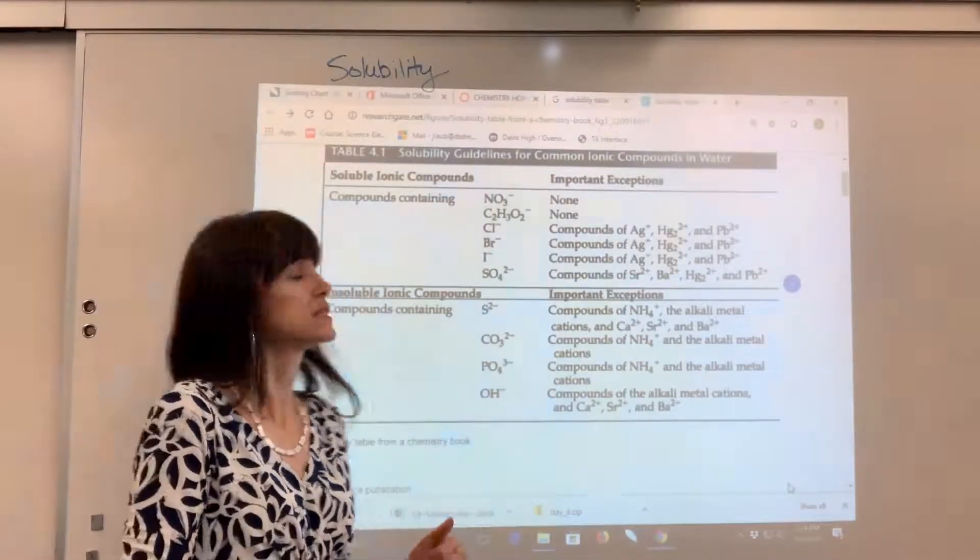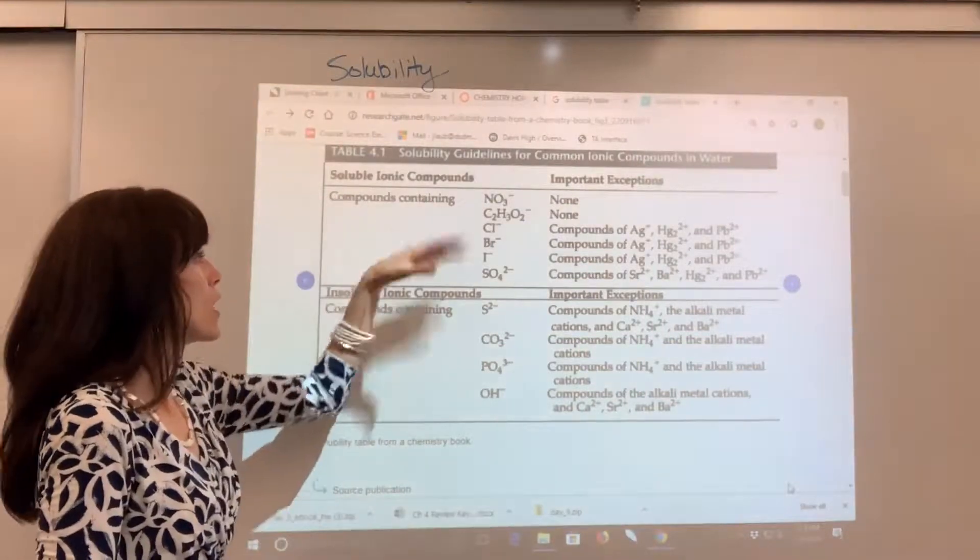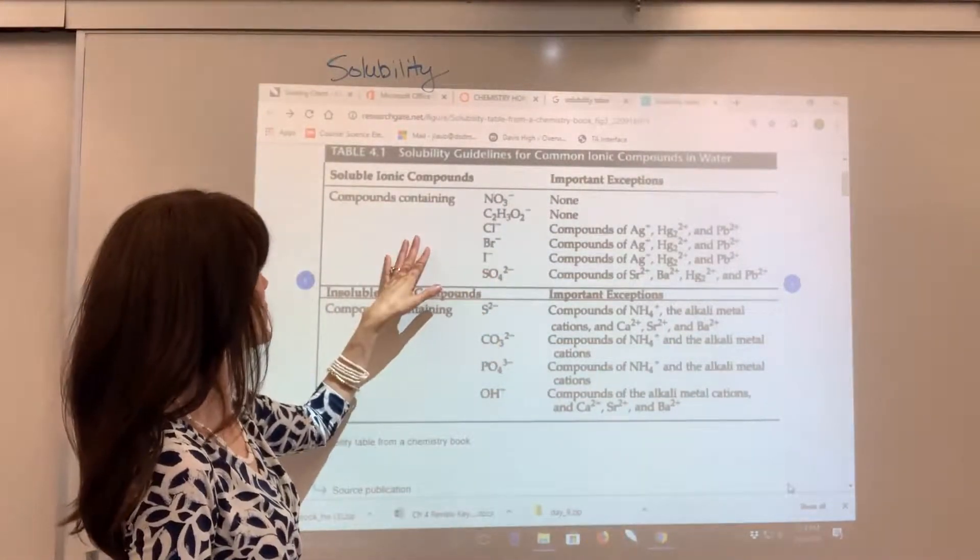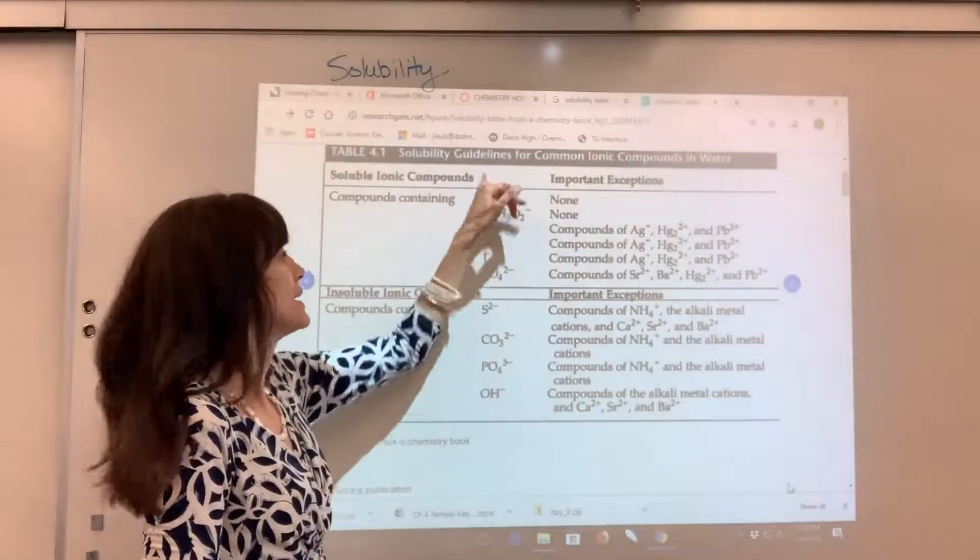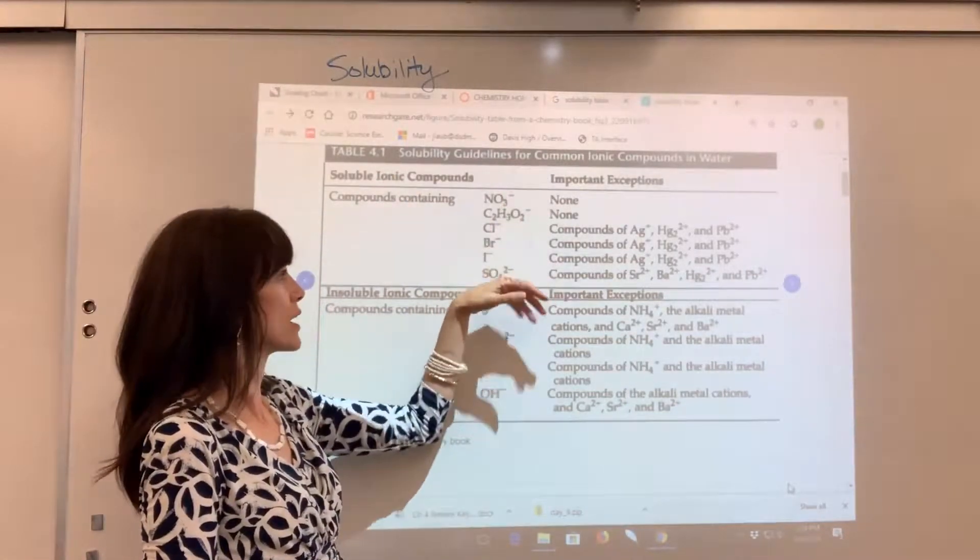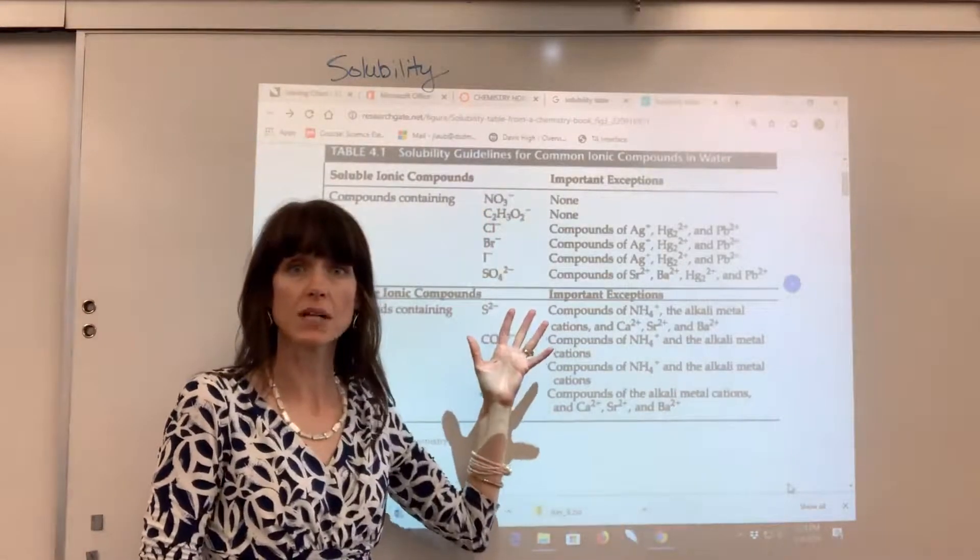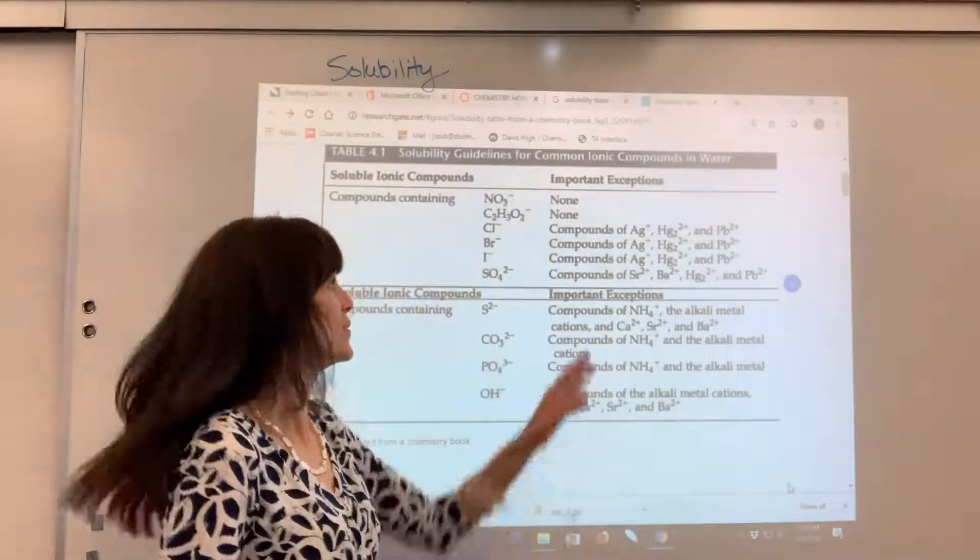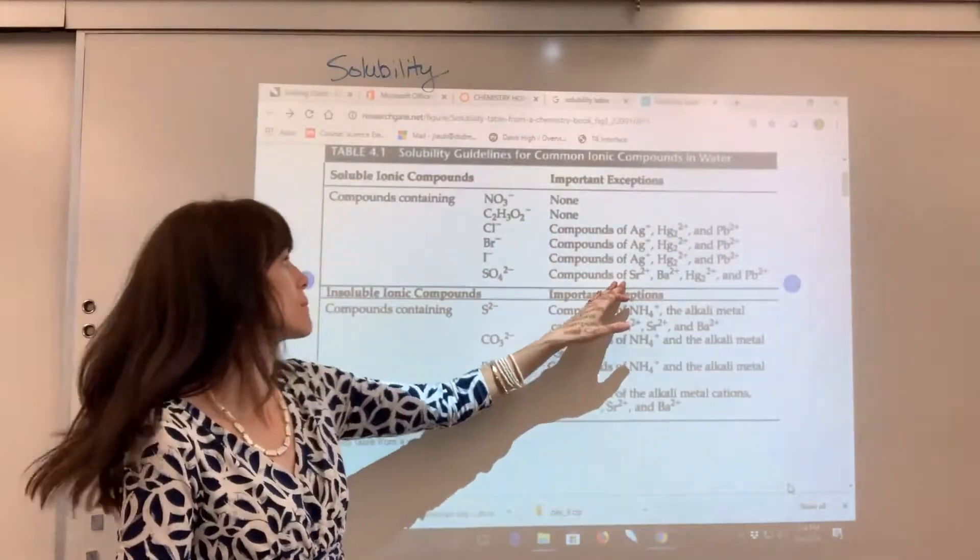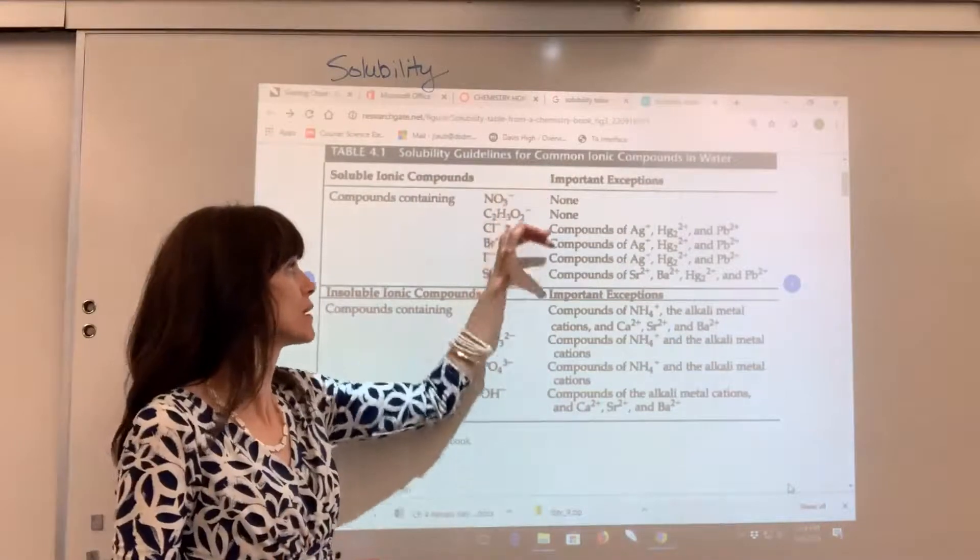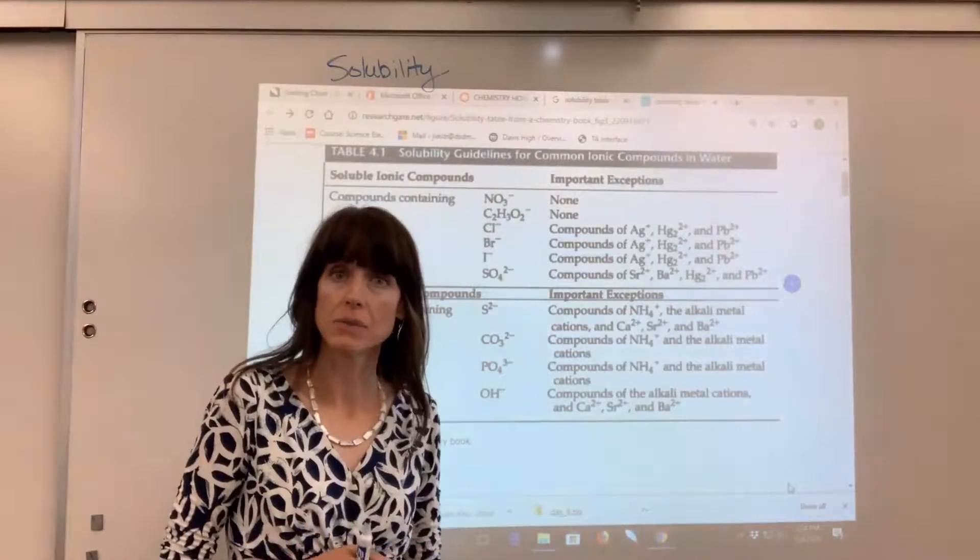So, how to read one of these tables. Compounds containing, and it gives this list, this is going to be soluble. Anything containing any salt containing nitrate, acetate, chloride, bromide, iodide, sulfate, those are going to be soluble, except notice we have a couple of exceptions here. So, nitrates, acetates, no exceptions. You put any metal with those, they are going to be soluble.